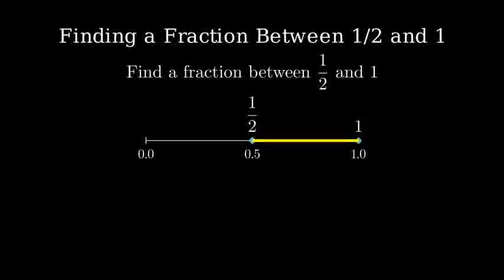One way to find a number between these two values is to take their average. The average of two numbers is their sum divided by two. Let's plug in our numbers. We have one half plus one, all divided by two.